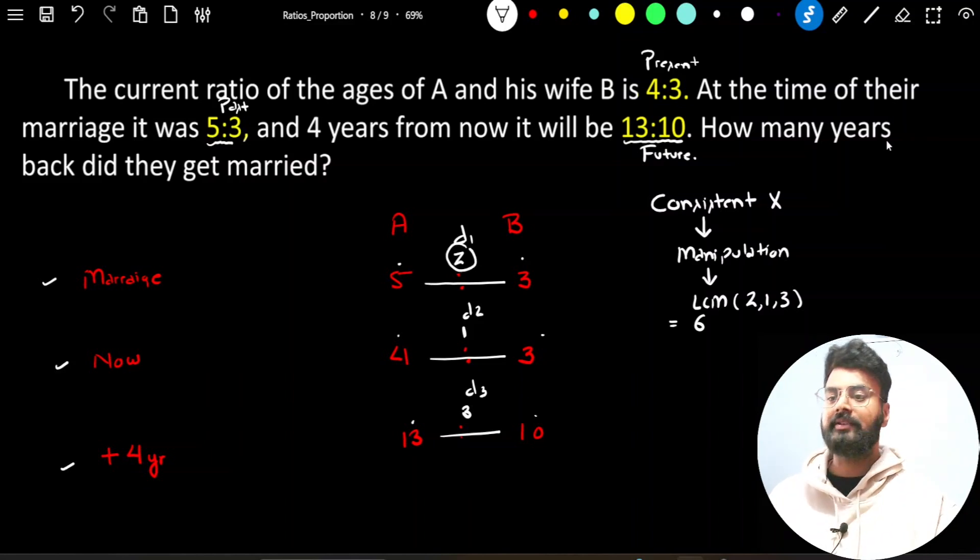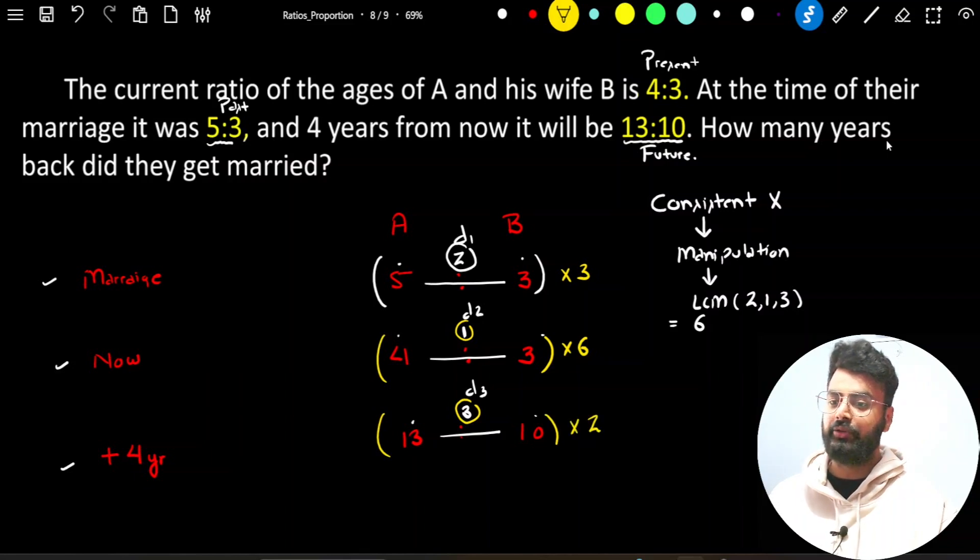Look at the first value of difference, it's 2. So 2 को 6 कैसे बनाऊंगा? किस number से multiply करूं? You would say multiply with 3. Well, multiply the first pair of ratio with 3. What about the second pair? Look at the difference value, it's 1. So I will multiply it with 6. Look at the third difference, it's 3. How can you make it 6? Multiply this ratio with 2.